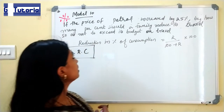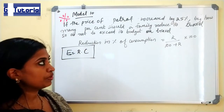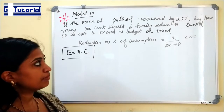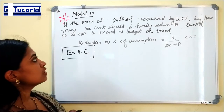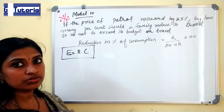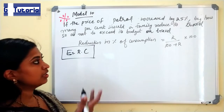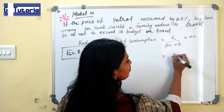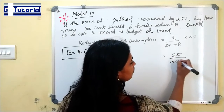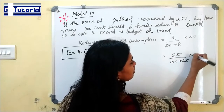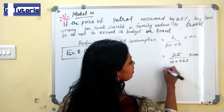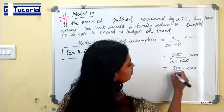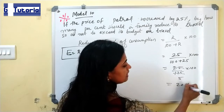Next question: The price of petrol increases by 25%. By how many percentage should a family reduce its travel so as not to exceed its budget on travel? Here the rate of increase is 25, so substituting into the formula: 25/(100 + 25) × 100 = 25/125 × 100 = 20 percentage.